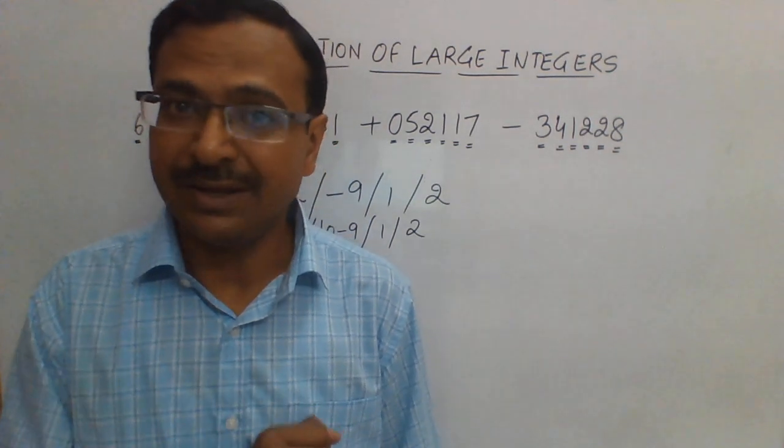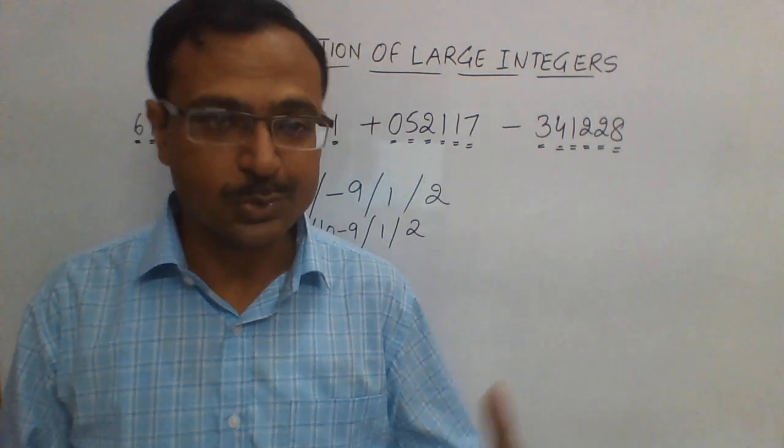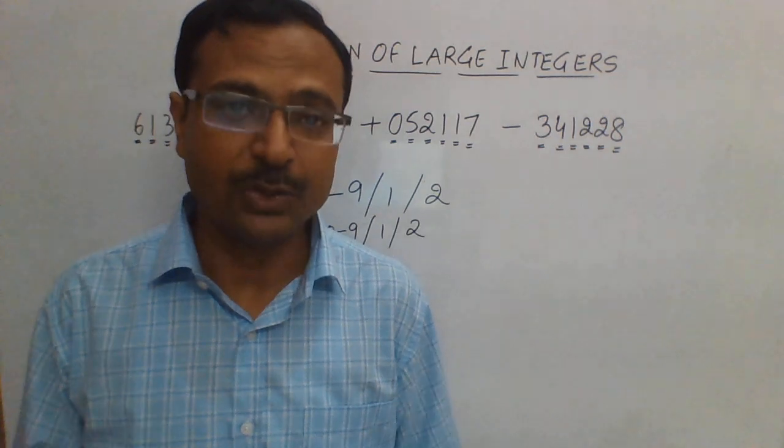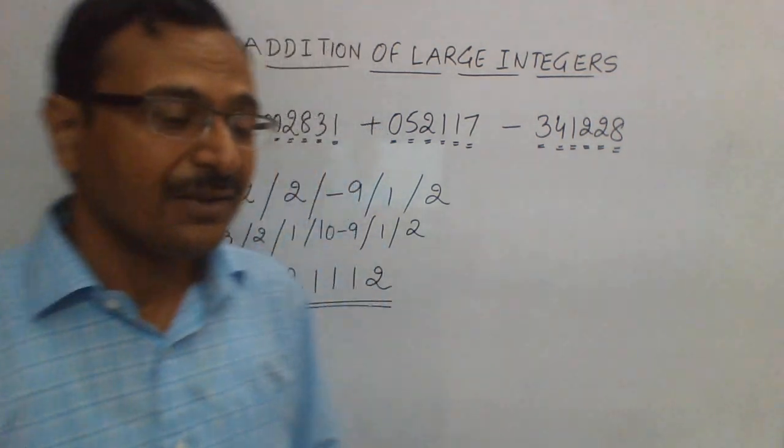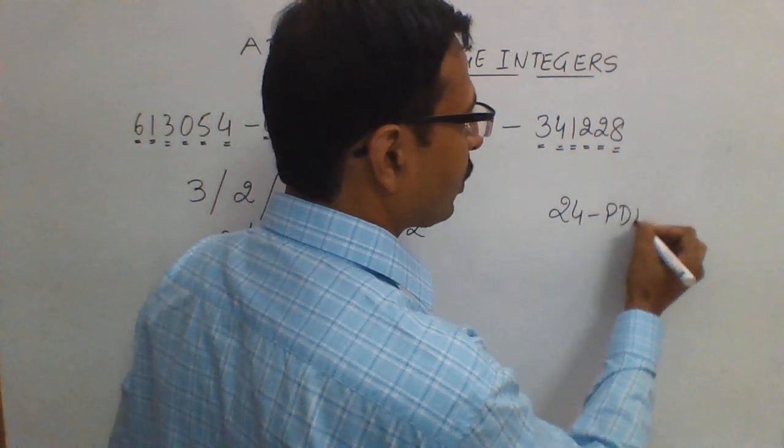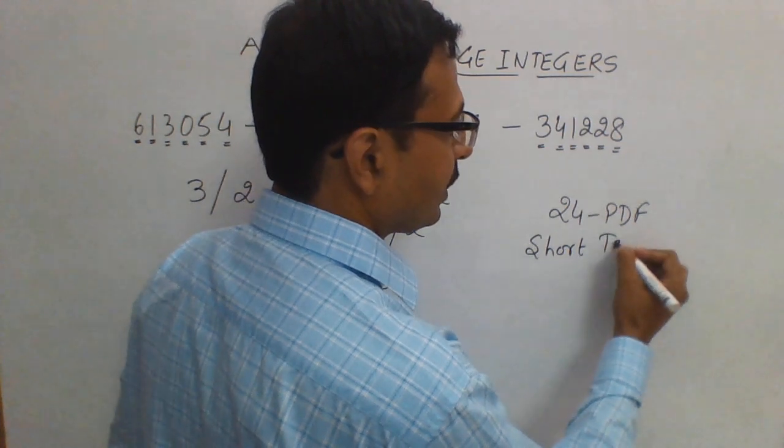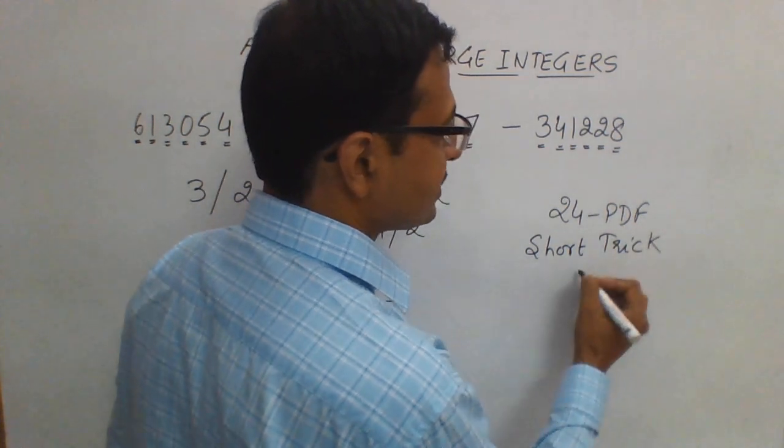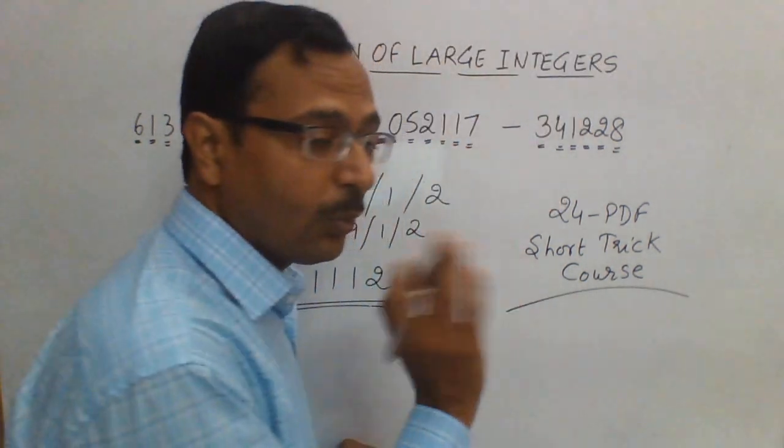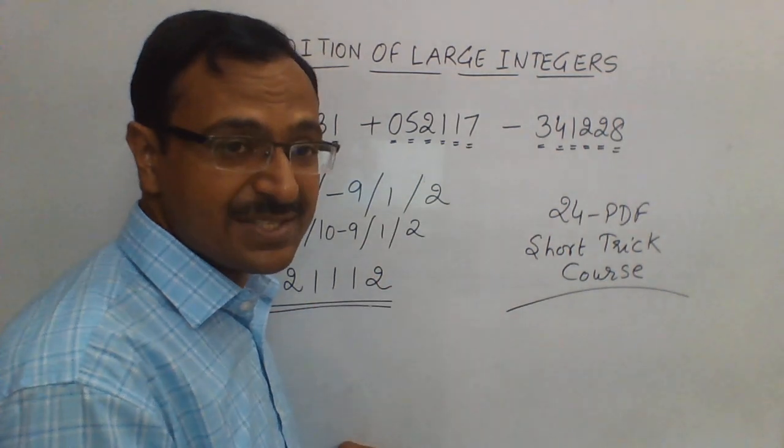Very beneficial channel for all parents and teachers who are mentors for junior students, and also for all those competitions where the quantitative aptitude portion is asked. And further, if you want the 24 PDF short trick course, I keep telling you to grab a copy because this course has over 350 short tricks and over 275 pages.